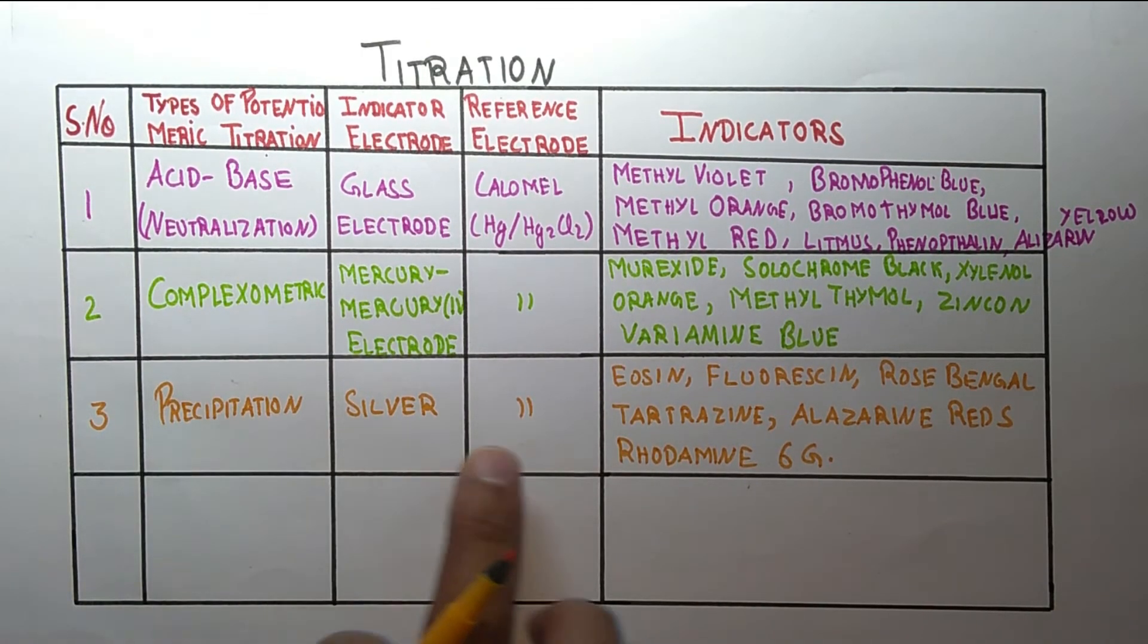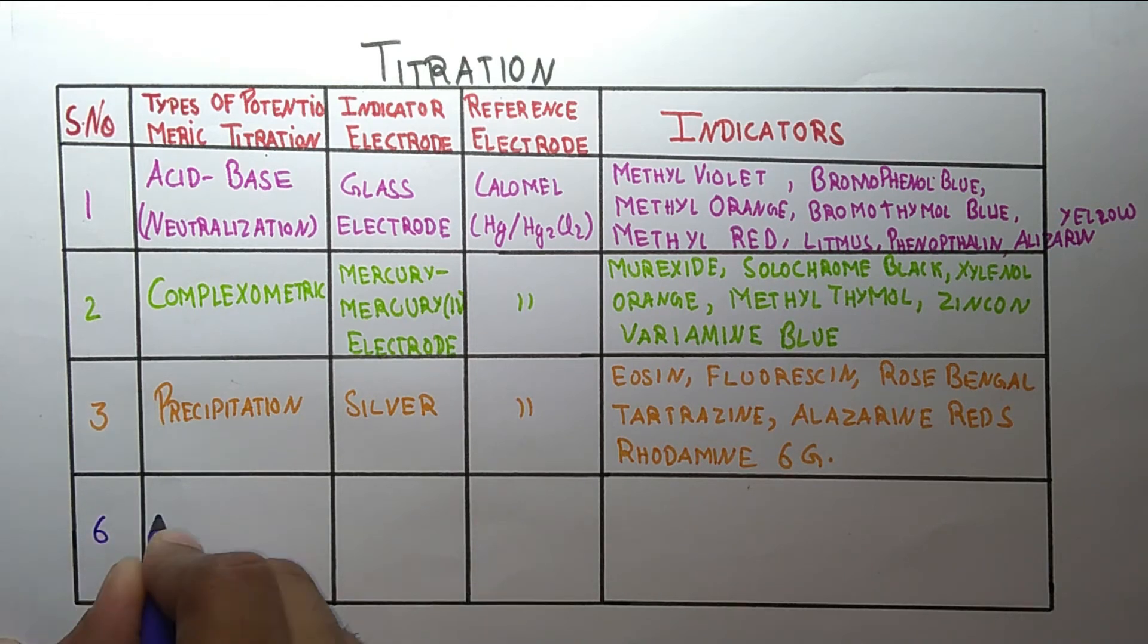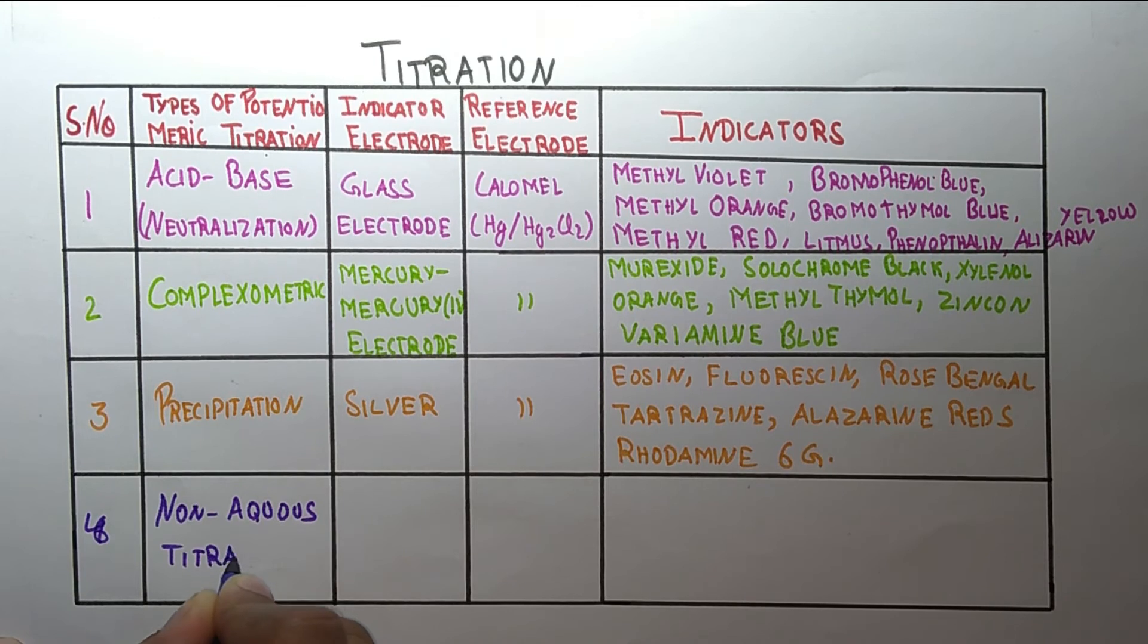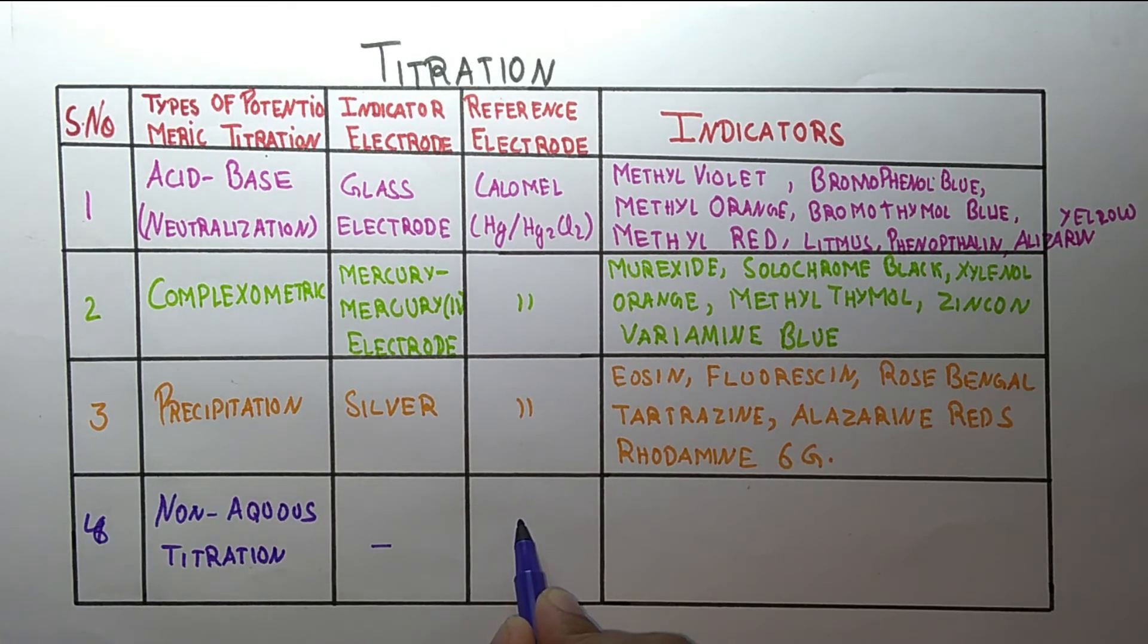So this is all about the precipitation titration. Now coming on the last type of titration, that is non-aqueous titration. The reference electrode is same as in all of these, and coming on the indicators.